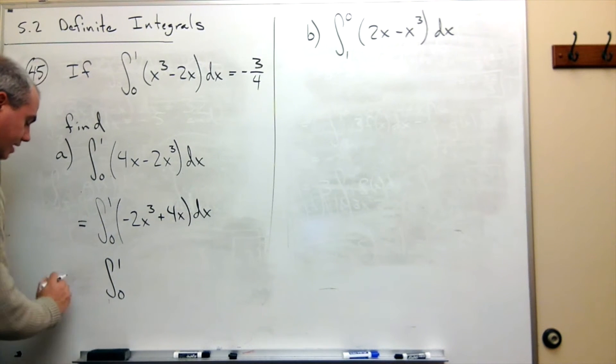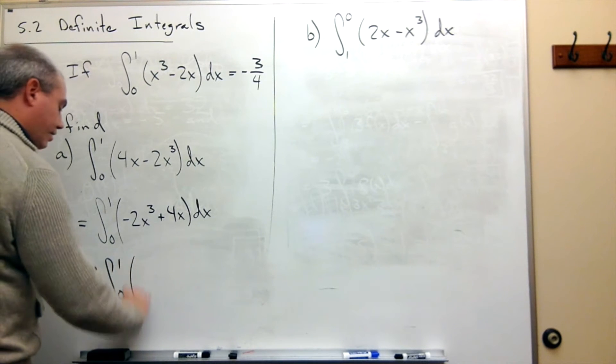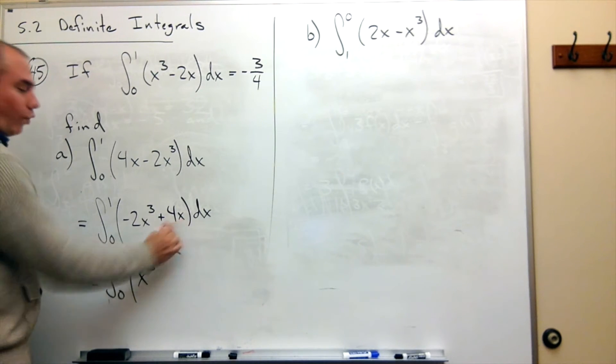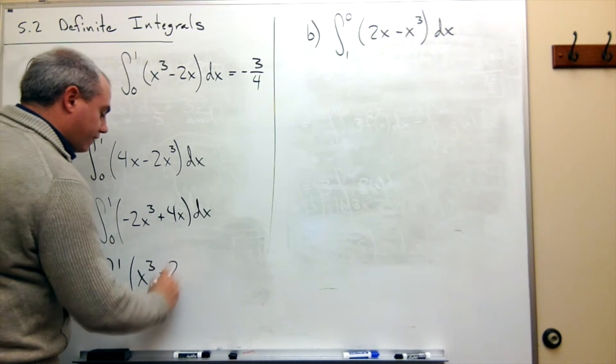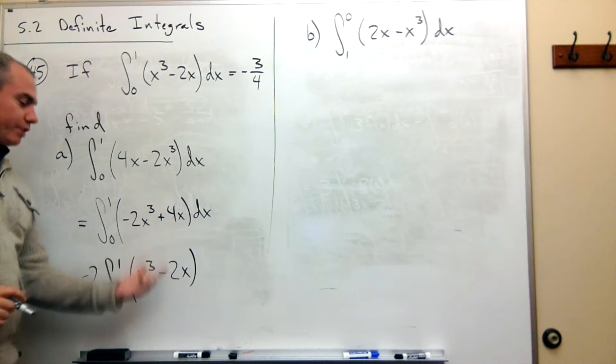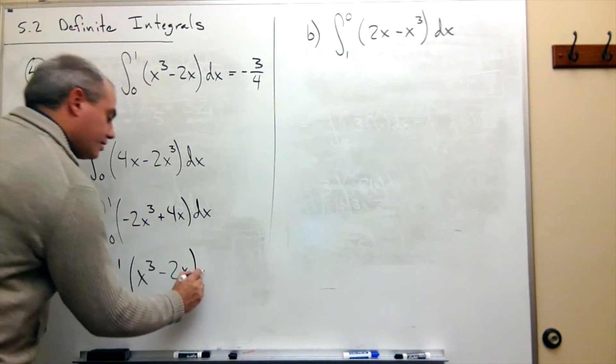So let's rewrite this. This is equal to negative 2, and in here now I have an x cubed. And if I take negative 2 out of 4, then it leaves me with negative 2x. So I factored a negative 2 out of this parenthesis to give me this, dx.